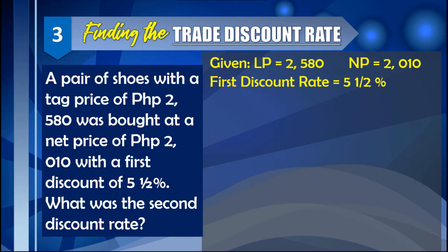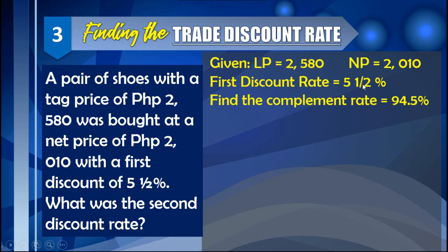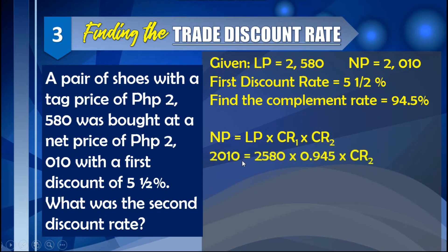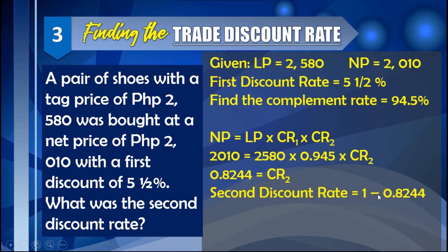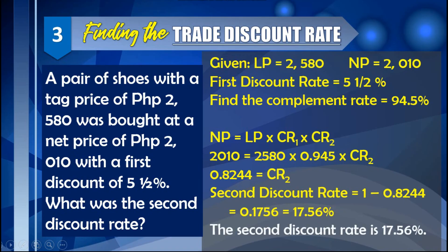First, we find the complement rate of the first discount: 100% − 5.5% = 94.5%, or 0.945. Using the formula, 2,010 = 2,580 × 0.945 × CR₂. Multiplying 2,580 × 0.945 and dividing both sides by that product gives CR₂ = 0.8244. To find the second discount rate, we compute 1 − 0.8244 = 0.1756, so the second discount rate is 17.56%.